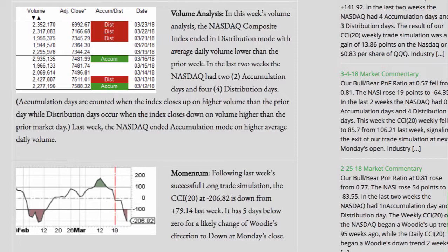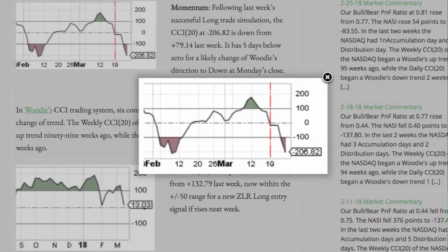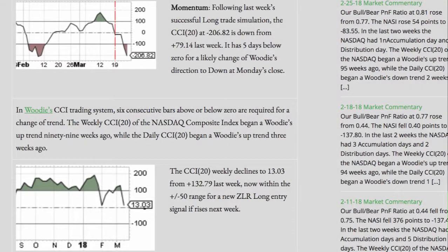Following last week's successful long trade simulation, the CCI 20 at negative 206.82 is down from a positive 79.14 last week. It has five days below zero for a likely change of Woody's direction to down at Monday's close. In Woody's CCI trading system, six consecutive bars above or below zero are required for a change of trend.